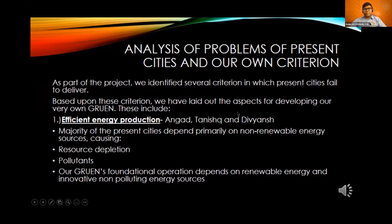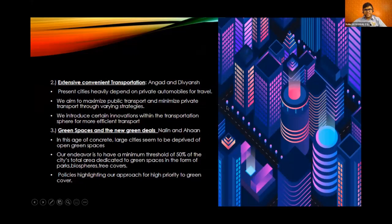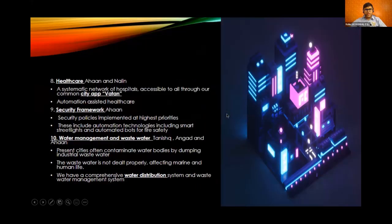In the Gruen project we were told to identify certain criteria on what is wrong with existing cities. This is the criteria we identified and we have improved our city on the basis of this criteria: energy production, convenient transportation, green spaces, waste management, urban agriculture, integrated city plan, education, healthcare, and water management.